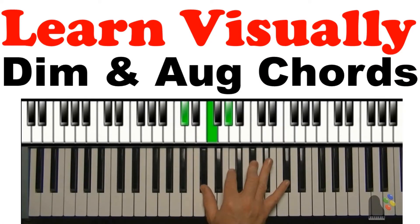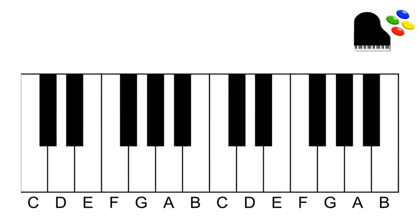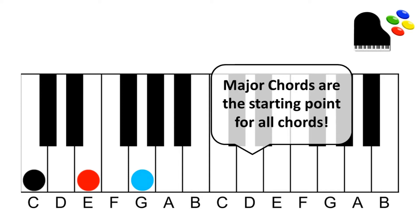Let's talk about diminished and augmented chords. The basis for our diminished and augmented chords are going to be major and minor chords. Make sure that you know major and minor chords because your major chords are going to be your basis for all other kinds of chords.